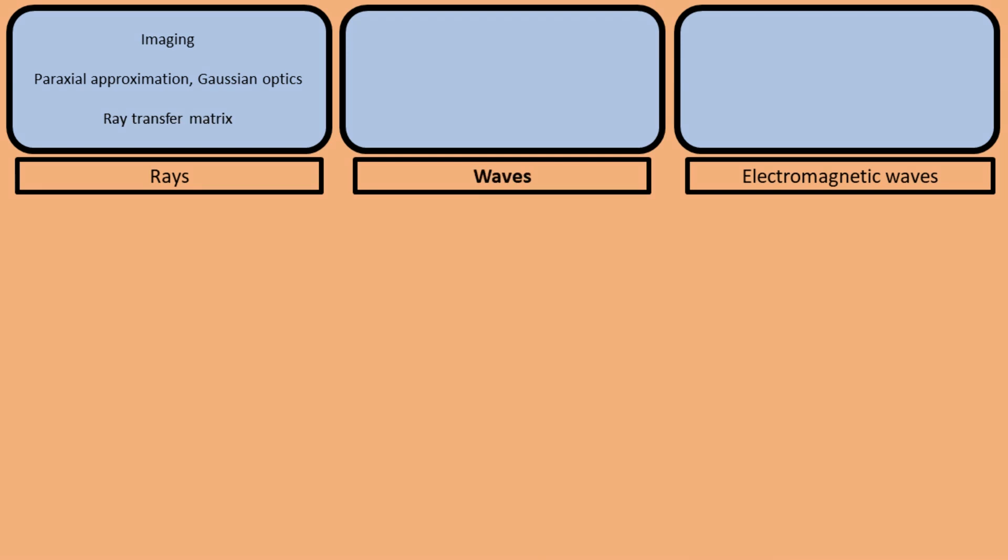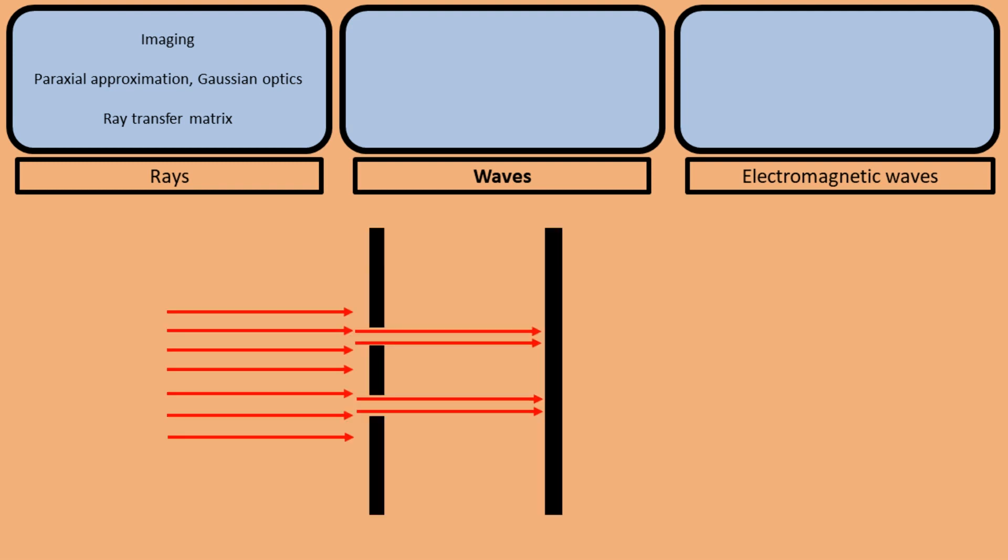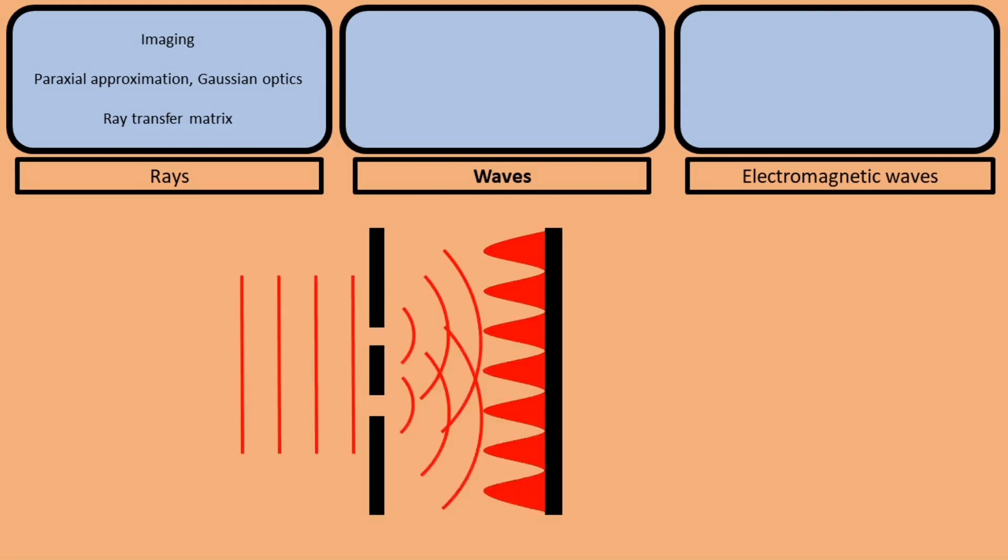So ray tracing and ray transfer matrices are ways to describe the propagation of light in the ray model. However, we know that light can be modeled more accurately as waves. After all, in Young's double slit experiment we don't observe a shadow of the two slits on the screen, but rather, we observe interference fringes. So when is the ray model valid, when should we use the wave model, and how do we describe the propagation of light using the wave model?